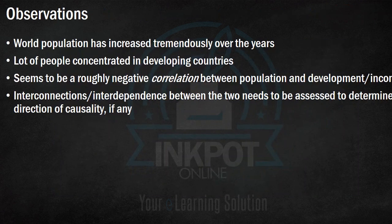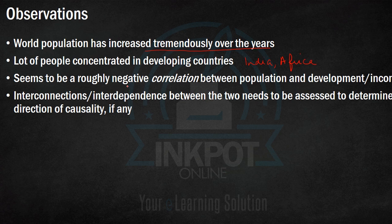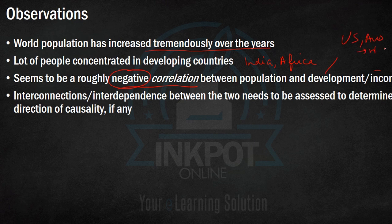Using this, we can make some observations. First, we saw in the first time trend that world population has increased tremendously over the years. Also, a lot of people are concentrated in developing countries. India and Africa had large population sizes, and there seems to be a rough negative correlation between population and development. Countries which have high population like India and Africa also have low income, while rich countries like the US and Australia have a low population.